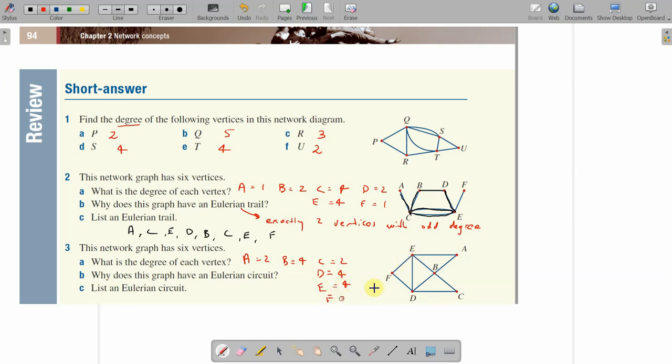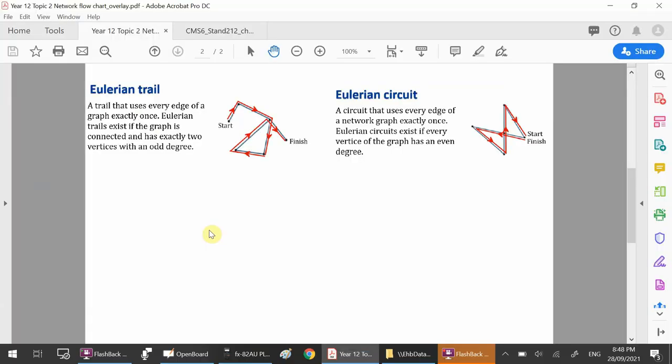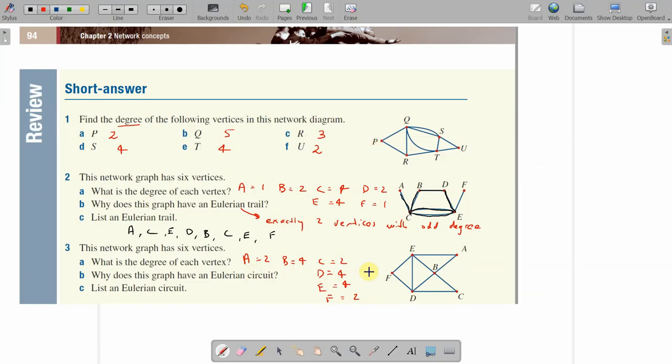Why does this graph have an Eulerian circuit? An Eulerian circuit is the same as an Eulerian trail where each vertex is even, but you've got to start and stop in the same one. And that requires every vertex to be even for this one. And it looks like it is, so because every vertex is even, you've got to have that to make it an Eulerian circuit.